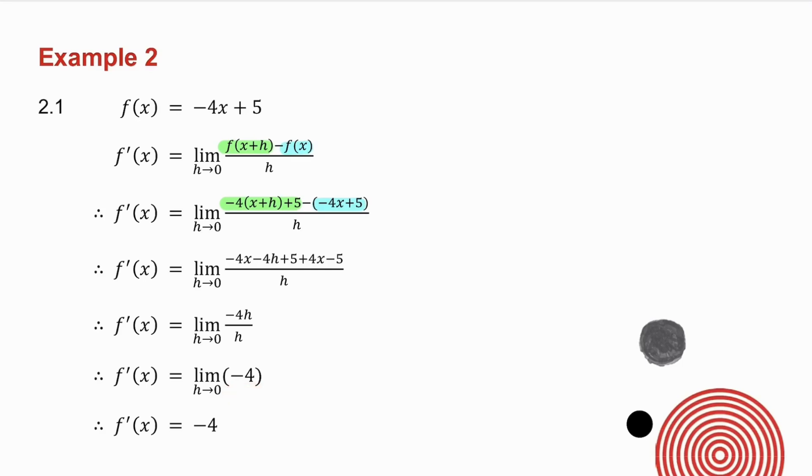Minus 4h divided by h is minus 4. Now if I take h tending to 0, well what happens to minus 4 as h gets closer and closer to 0? Well there's no h in minus 4. So what happens to minus 4 as h is anything? It's just equal to minus 4. So as h tends to 0, my answer is simply minus 4.